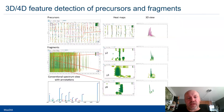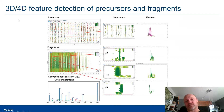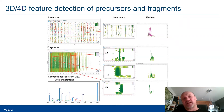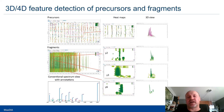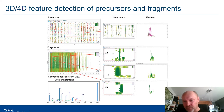MaxQuant is probably known for 3D feature detection in LC-MS data and 4D if you have ion mobility coupled to the LC-MS data. This is now generalized to the fragmentation data, so in the fragments we do exactly the same feature detection and isotoping as in the MS1 data for DDA. You also have all these visualization and browsing capabilities where you can look at these fragment peaks in 3D or 4D form.